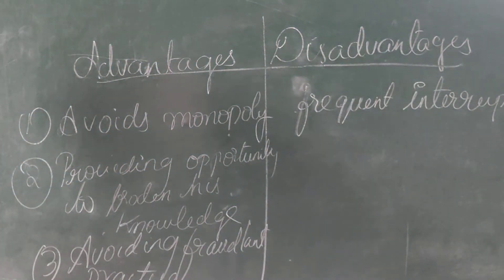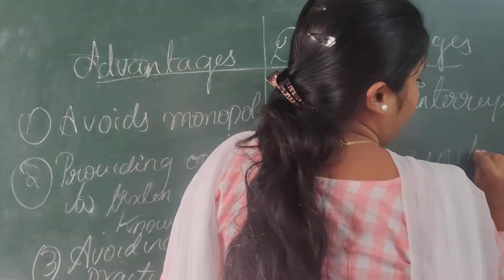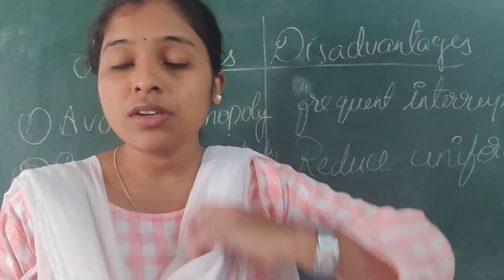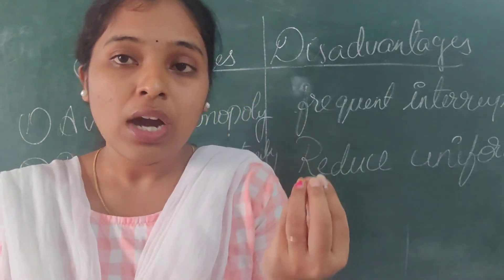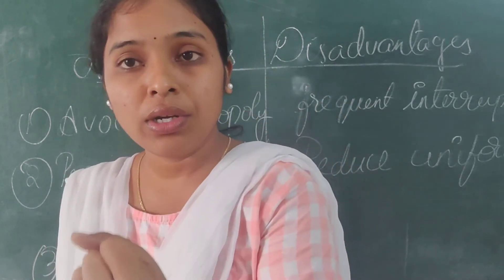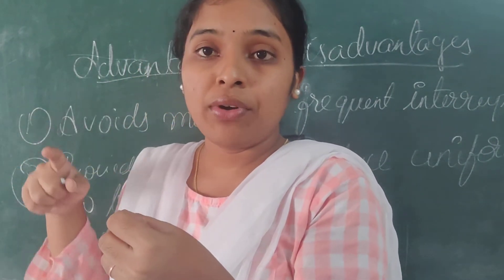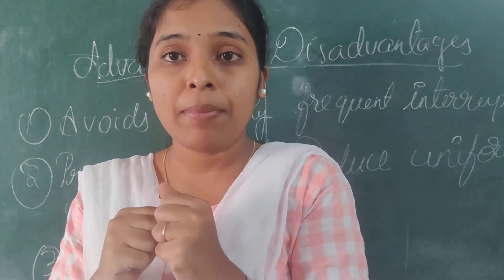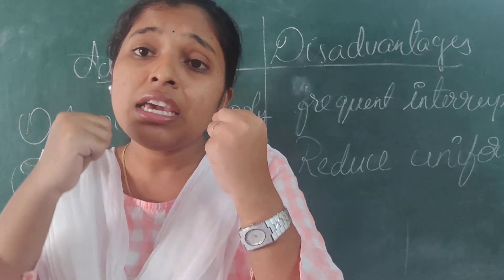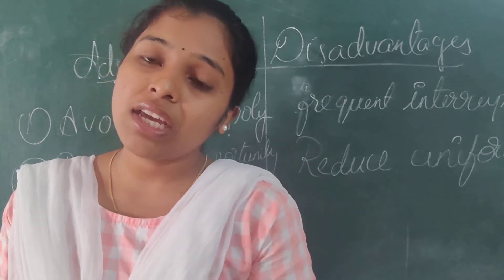The next disadvantage is reduced uniformity. For example, if we recruit and train a person to be perfect at their work and then assign them, but during job rotation a new, untrained person is placed in that role, there will definitely be a difference in the quality of work, and uniformity will be missed.